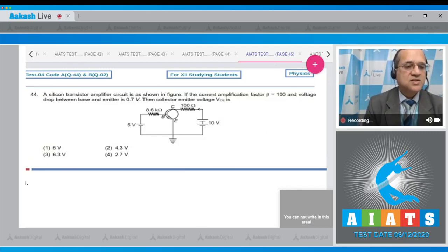Question number 44: A silicon transistor amplifier circuit is as shown in the figure. If the current amplification factor beta is equal to 100 and the voltage drop between the base and the emitter is 0.7 volt, then the collector-emitter voltage VCE is equal to, four options. This is 5 volt B and E. The potential drop across B and E is given 0.7 volt.